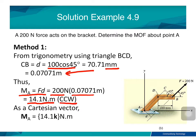Since the direction is counterclockwise (positive), in Cartesian notation the moment is MA = 14.1 K N·m. The K direction is used because the axis of moment lies perpendicular to the axes of force and distance. Since force and distance lie in the X-Y plane, the moment axis is Z, represented by K.